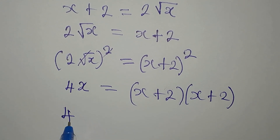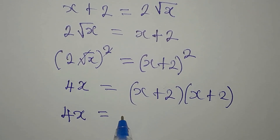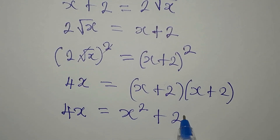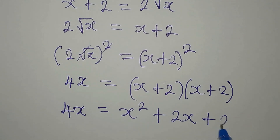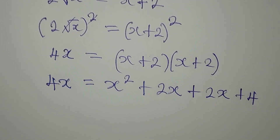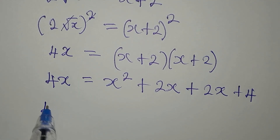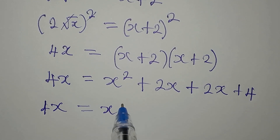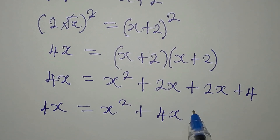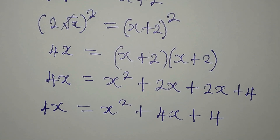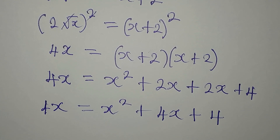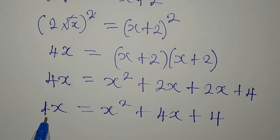Expanding the right side: x times x is x squared, x times 2 is 2x, 2 times x is another 2x, and 2 times 2 is 4. So we have 4x equals x squared plus 4x plus 4, because 2x plus 2x is 4x.